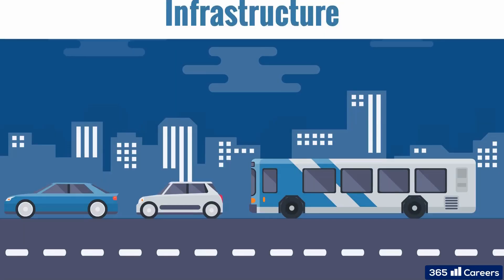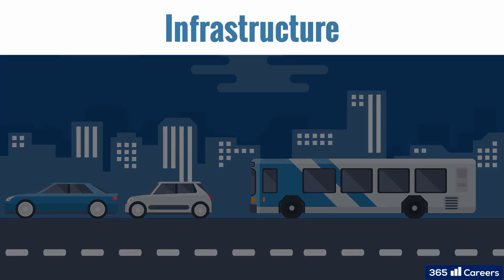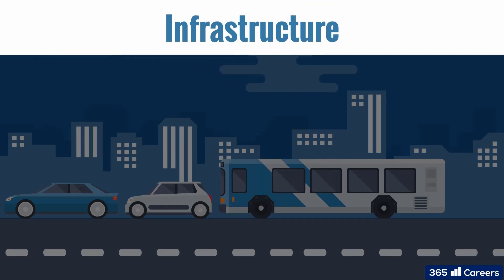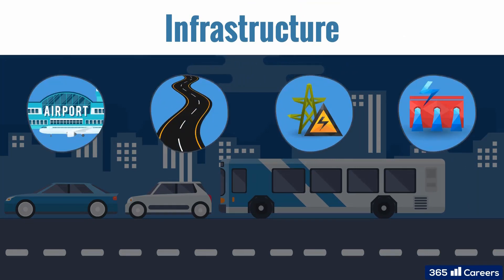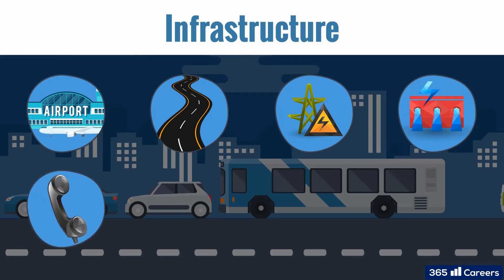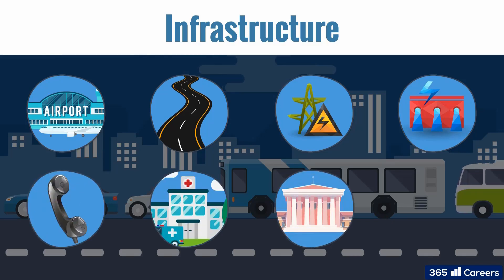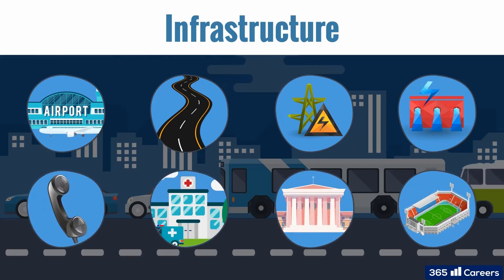Next, we have infrastructure. These are long-lived real assets intended for public use and benefit, such as airports, roads, electric grids, water utilities, telecommunication infrastructure, and so on. Investors can gain exposure to this asset class by investing in the equity of companies owning and operating the underlying assets, ETFs, and private equity funds.